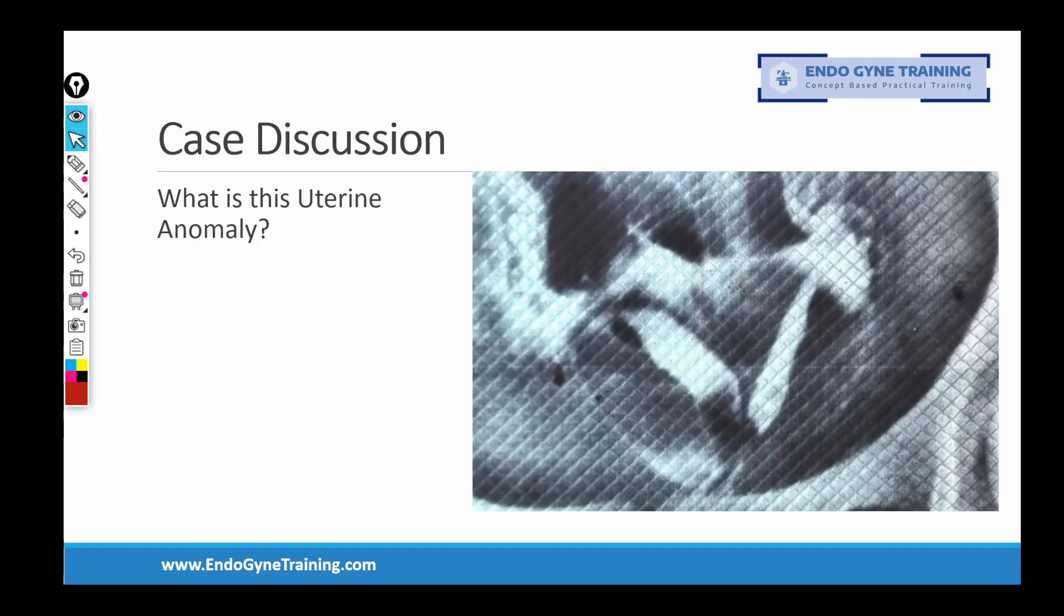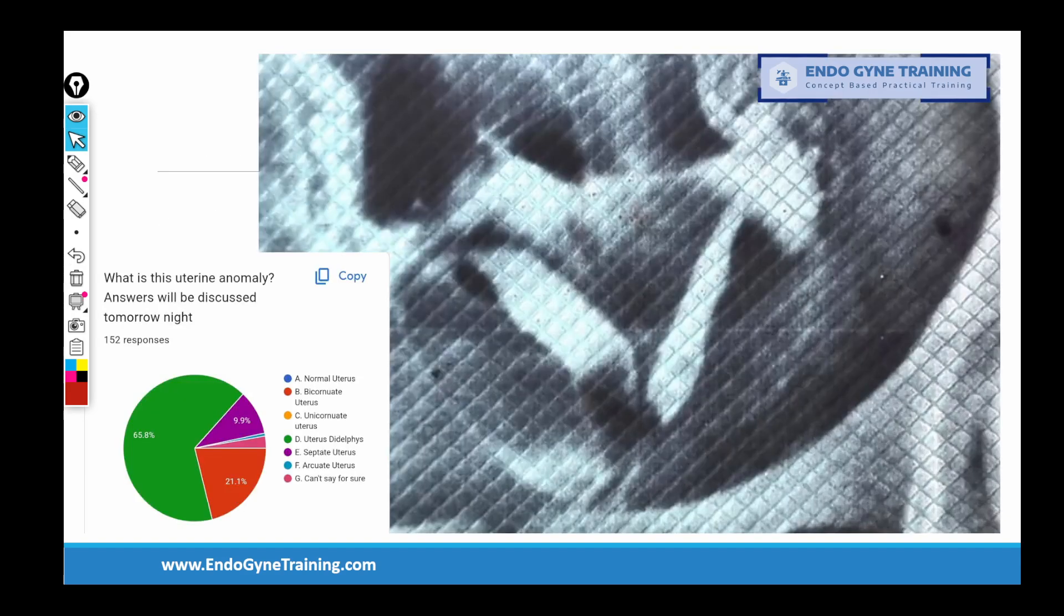This was the image which was actually posted in the group and we had asked what exactly do you think this uterine anomaly is. Let's see what most people have answered. The commonest answer selected by everyone is 65.8% said this is uterus didelphys. The second most common is bicornuate uterus at 21%, and third is septate uterus at 9%.